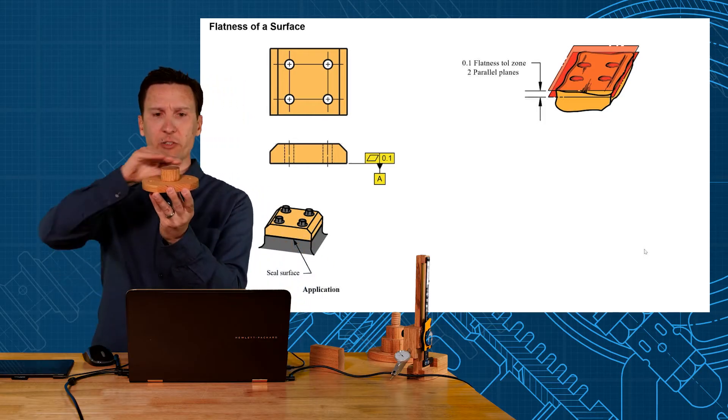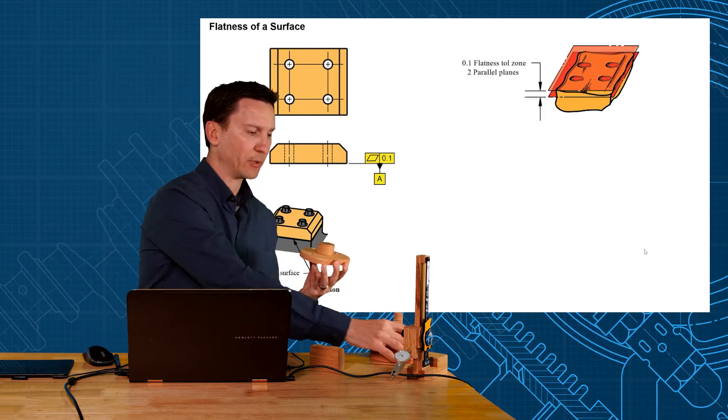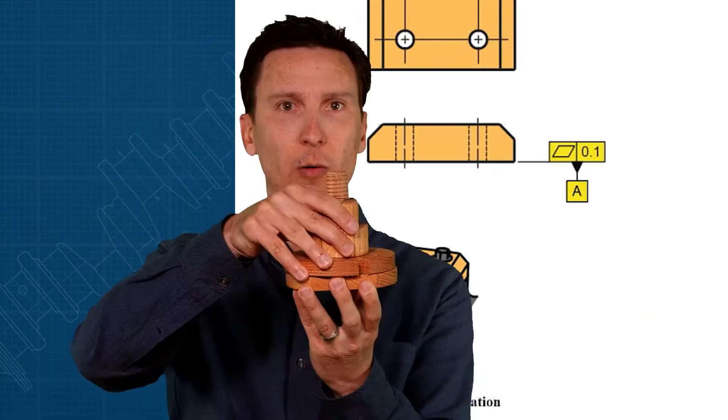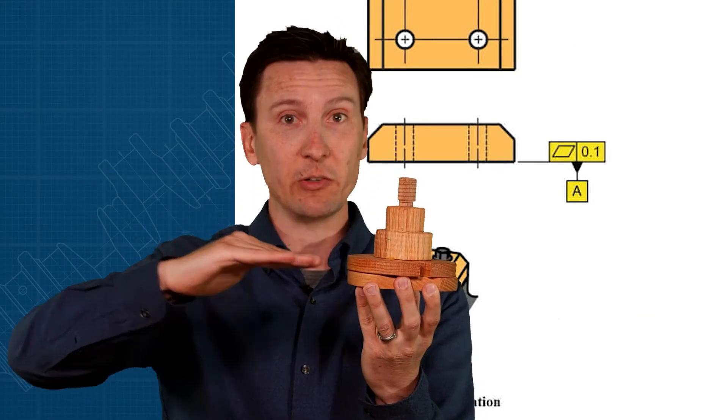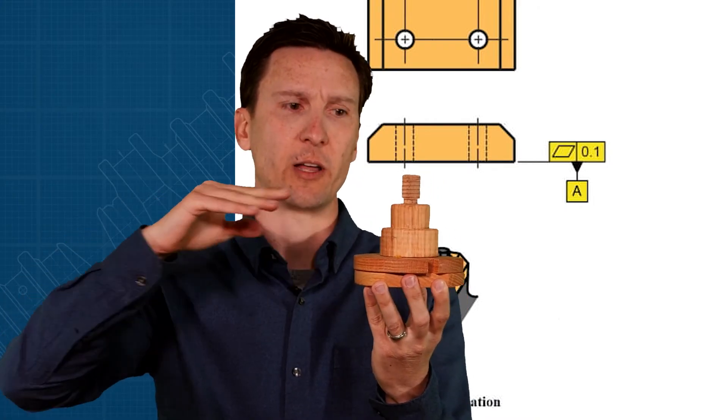Let's say that we have this mounting surface and it's produced convex. What happens when it mounts to the mating part? Well it might rock on there a little bit. So you want to control the stability on your mounting surface. We like to put a nice flatness tolerance on there.